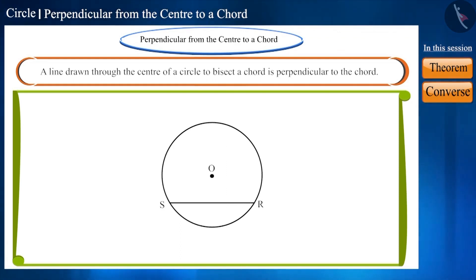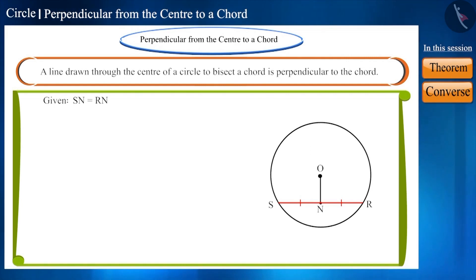A line from the center O to the point N is drawn in such a way that it divides the chord into two equal parts. This means here SN and RN are equal. And this is given to us.